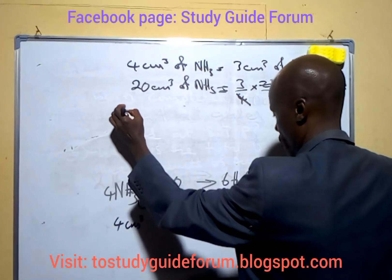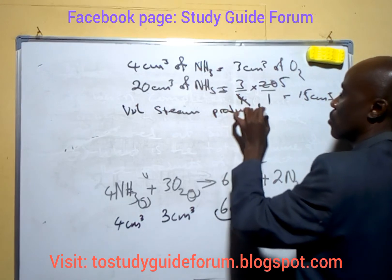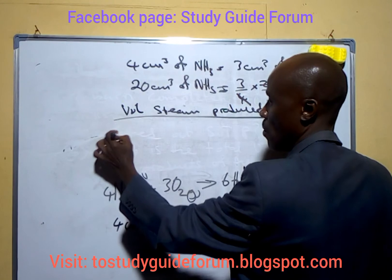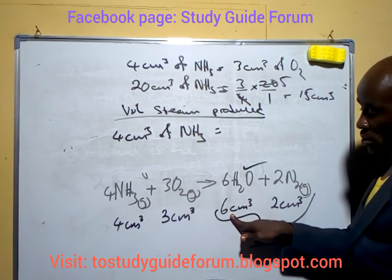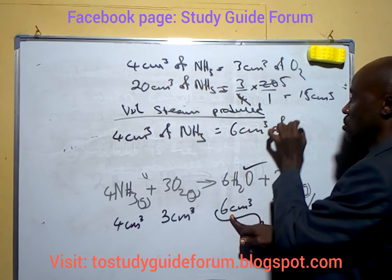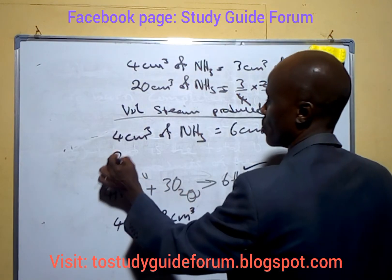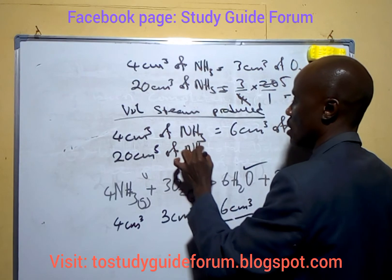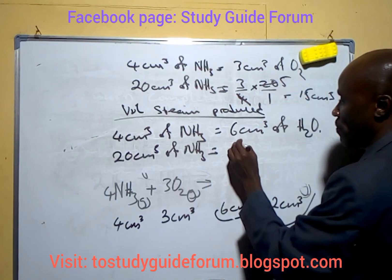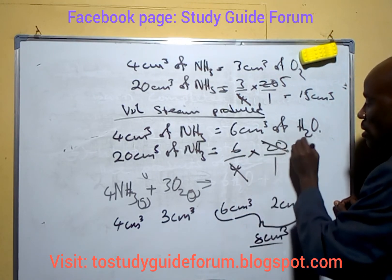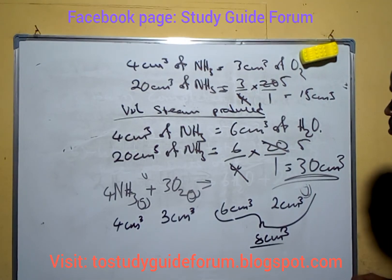Let's start with the volume of steam produced. From the chemical equation, 4 cm³ of ammonia gives us 6 cm³ of steam. So for 20 cm³ of ammonia, the volume of steam would be (6/4) × 20 = 30 cm³ of steam produced.